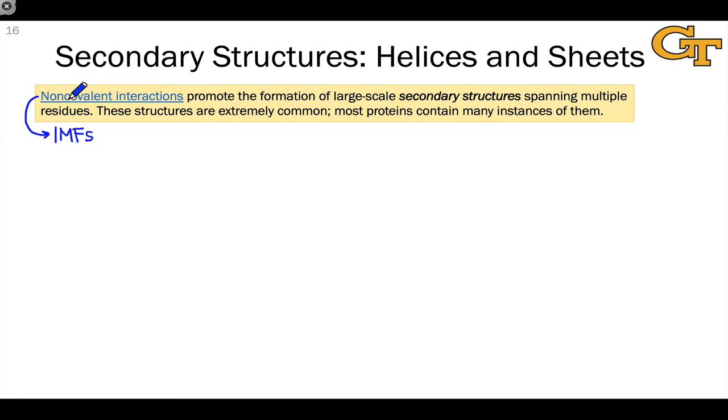They're not covalent bonding, but they are attractive interactions like dipole-dipole forces, hydrogen bonding, and things like this that are sort of bond-like. These promote the formation of relatively large-scale three-dimensional structures called secondary structures that recur in proteins. They're extremely common, and most proteins contain many instances of these helical and sheet secondary structures.